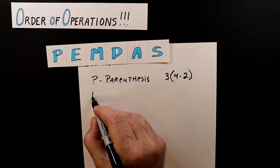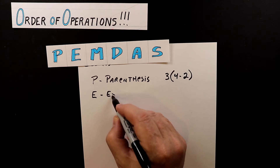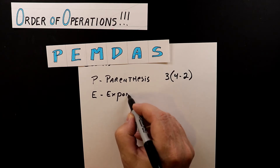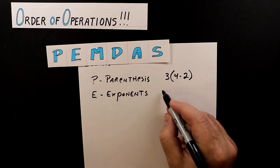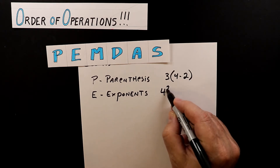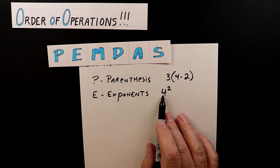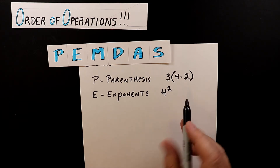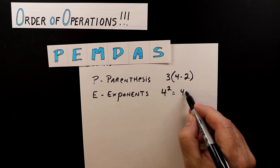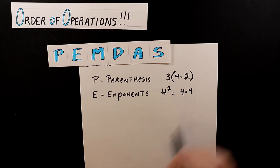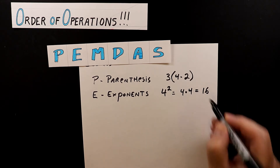The next letter is E, which stands for exponents. You may have seen something like this in your math classes — four squared, or four to the power of two. This is the same thing as four times four, which equals 16.